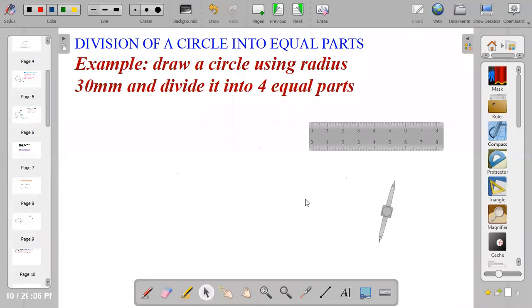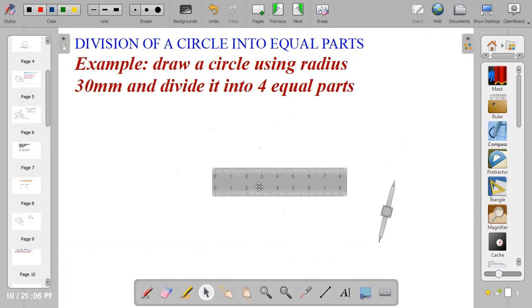Division of a circle into four equal parts using radius 30mm. So you bring out your ruler and measure the diameter of the circle. Since the radius has been given as 30mm, you multiply the radius by 2. That is 30 multiplied by 2, which gives 60mm.